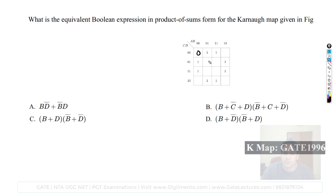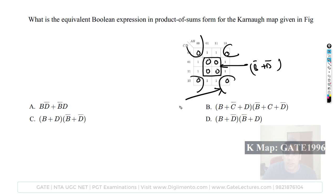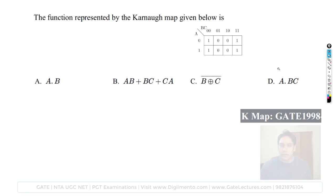For the POS expression, the zero sub-cubes give sum terms. One sub-cube of zeros gives (D-complement plus B-complement), and the corner zeros give (D plus B). Combining: (B plus D)·(B-complement plus D-complement), which matches option C. Option C is the correct answer.